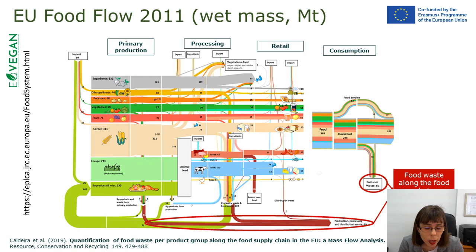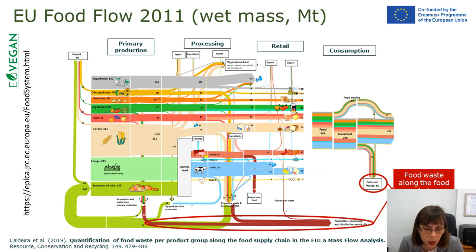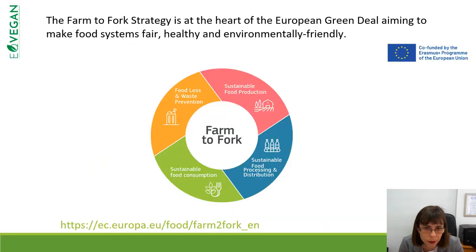We need to think about food waste and how to reduce it — food waste along the food chain is 129 megatons. We need to think about farm-to-fork strategy, food loss and food waste prevention, sustainable food production, sustainable food processing and distribution.